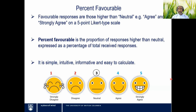The first statistic, and the most straightforward, is percent favorable. On a five-point scale, favorable responses are those higher than neutral — agree and strongly agree. Percent favorable is the proportion of responses higher than neutral, expressed as a percentage of total received responses. For example, if out of 20 responses, 18 are agree or strongly agree, that's a 90% favorable rating. This statistic is simple and intuitive, but blunt — it does not distinguish between a 4 and 5, or between a 1 and 2. That's why it should be used alongside other statistics.